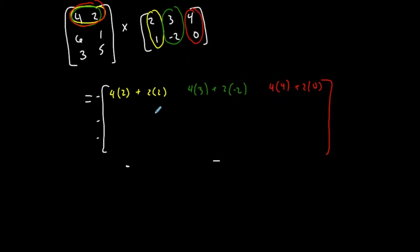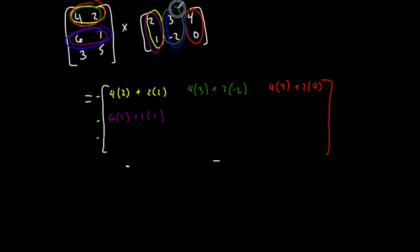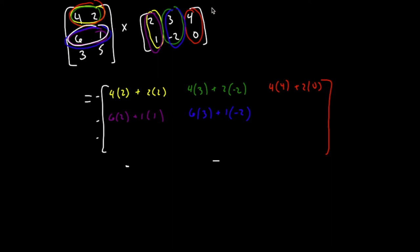Now let me determine the element in row two, column one. I'm going to look at row two in my first matrix and column one in my second: six times two, plus one times one. Then row two, column two: six times three, plus one times negative two. Then row two, column three: six times four, plus one times zero.